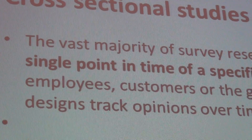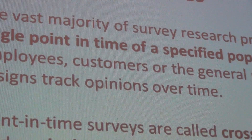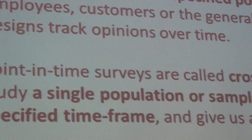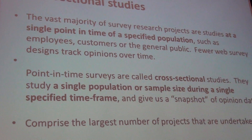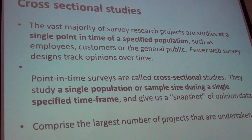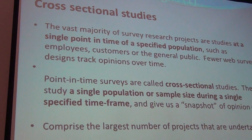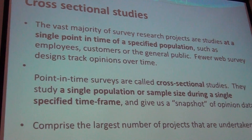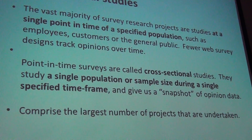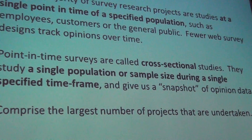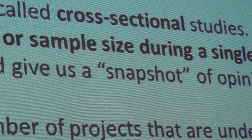Cross-sectional means a snapshot in time — you're looking at what happens now, studying a specific population now. That 'now' could be like a study on journals over two years; that's still a 'now' because you're not comparing over time. My snapshot in time was the articles over two years, so that's a cross-sectional study.